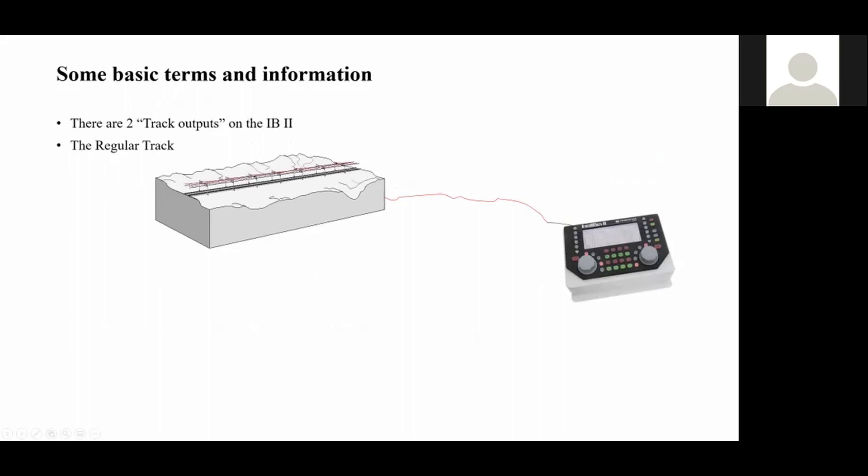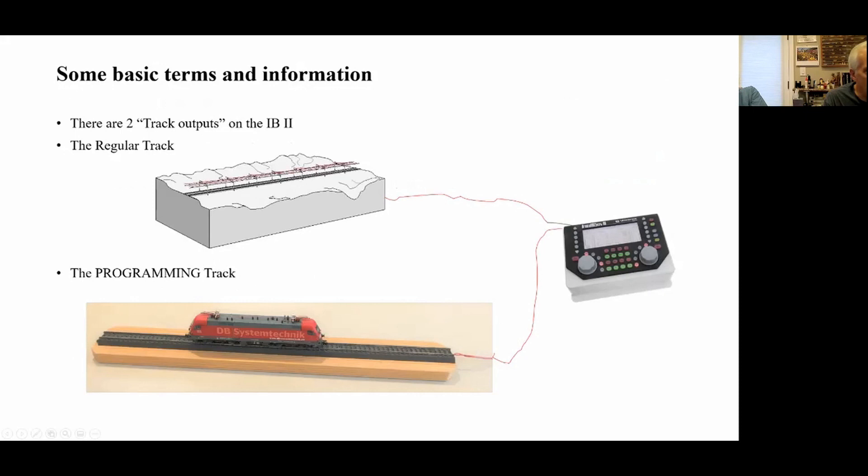Some basic terms and information. On an IntelliBox, there are actually two outputs. There's a regular track output on the back of the IntelliBox — this would be what we control our module with. And then there's also another output which goes to a programming track, and that's a special track where you can do some programming on the main, but we won't get into that this evening.